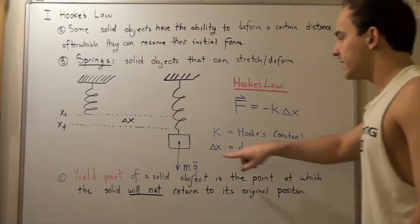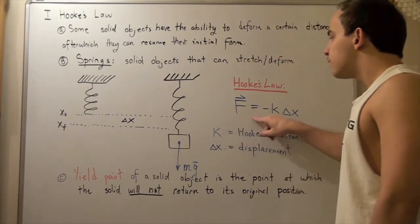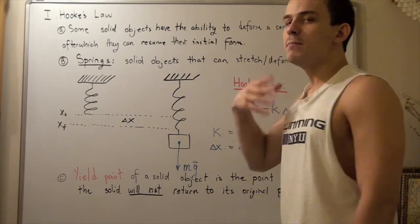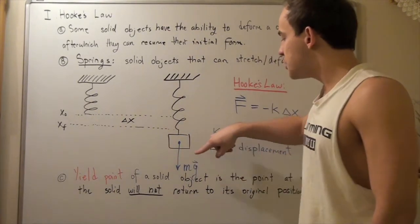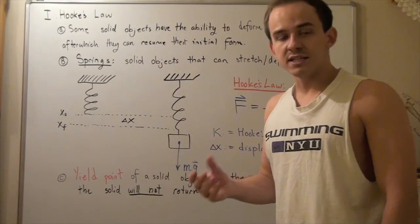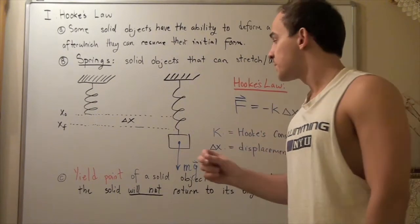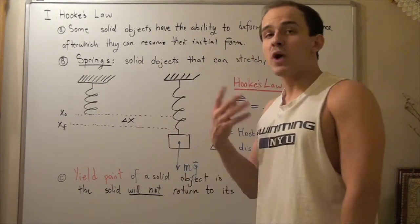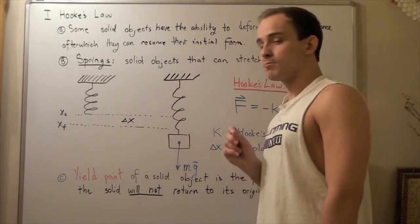In this case, to find our force, we simply take our mass of the object and multiply it by our g, our gravitational constant. That will give me my force that this mass and gravity exerts on this spring.